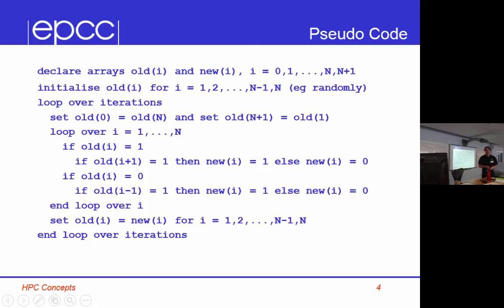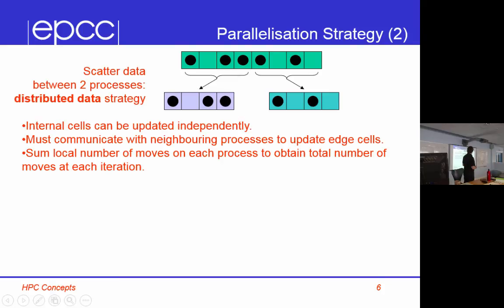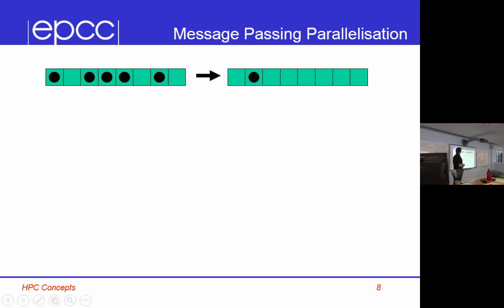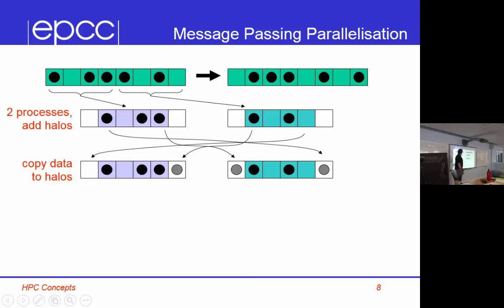This nicely illustrates Gustafsson's Law. Imagine it takes half a second to update a cell. In the serial code with eight cells, that takes four seconds. In the parallel code with two processes, each process updates four cells — that's two seconds. So we've halved the time, it's twice as fast. Well, not quite, because we also have to do the communication.